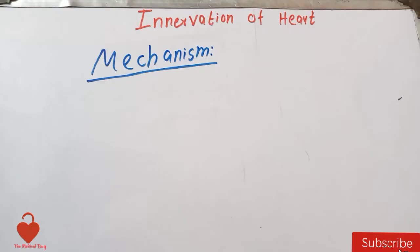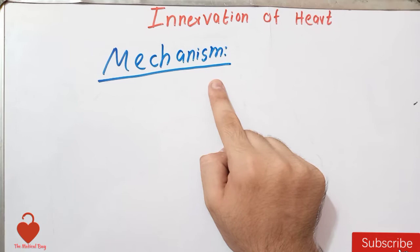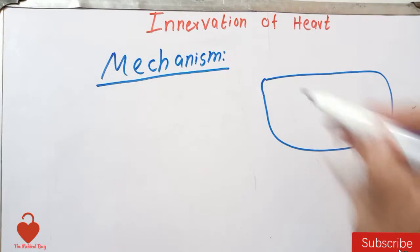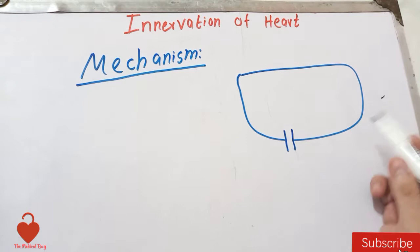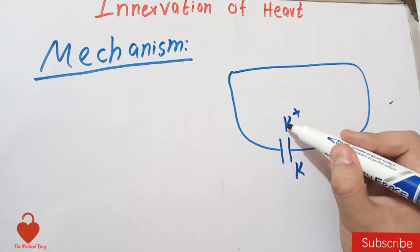Now let's talk about the exact mechanism by which parasympathetic innervation decreases the heart rate and excitability. The acetylcholine released at the cardiac muscle will cause the formation of increased potassium channels in the myocardial membrane and will also open already-present potassium channels, so that the potassium — which is present in abundant concentration inside the cell — starts leaking out.